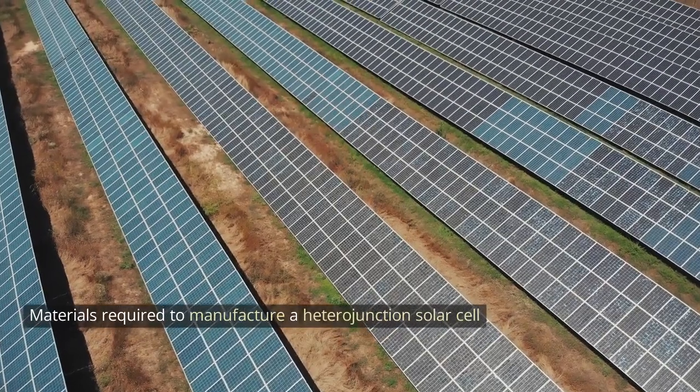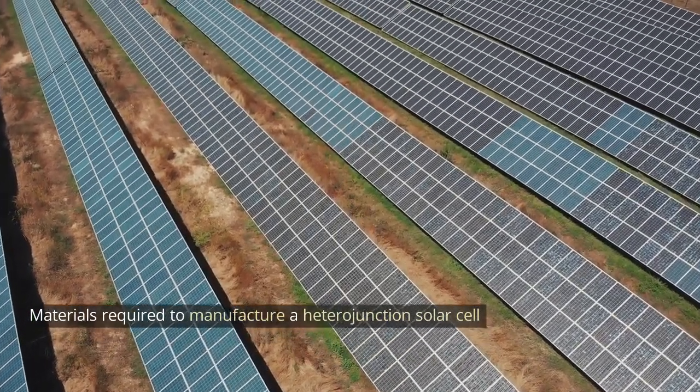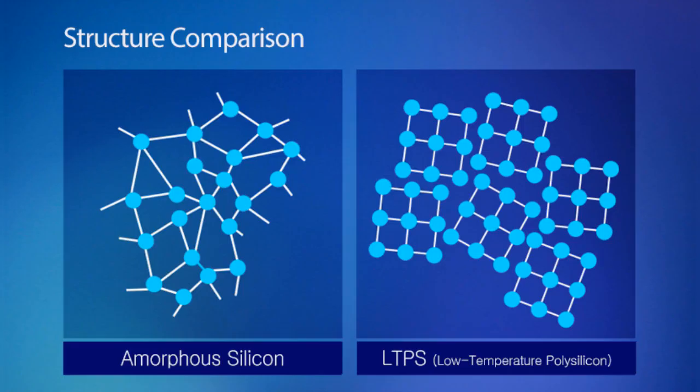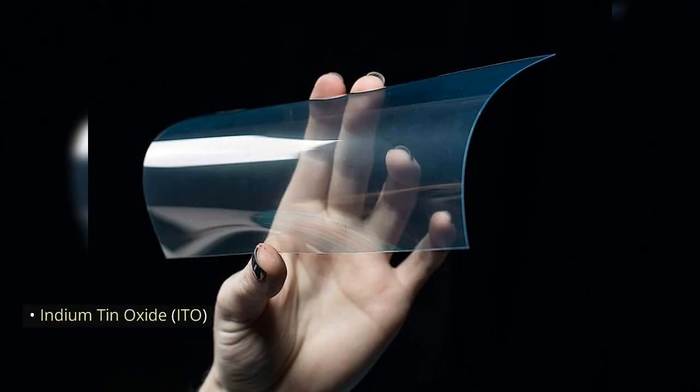Materials required to manufacture a heterojunction solar cell. There are three important materials used for HJT cells: crystalline silicon c-Si, amorphous silicon a-Si, and indium tin oxide ITO.